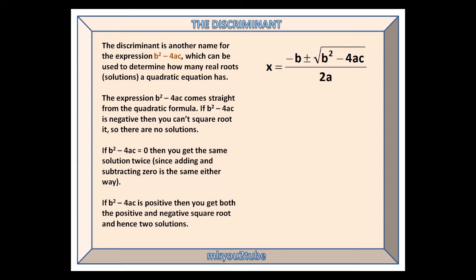so there are no solutions. If b squared minus 4ac equals 0, then you get the same solution twice, since adding and subtracting 0 is the same either way.